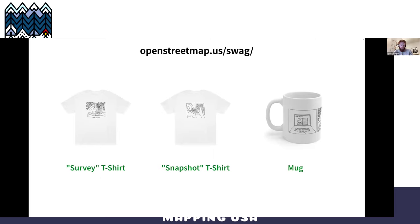We have t-shirts now. If you go to openstreetmap.us/swag, you can check out all our swag items — white t-shirts and white mugs with the classic Field Papers designs. And maybe if you contribute, we'll send you a free t-shirt. I did not run that past Maggie yet, so we'll see, but hopefully we'll have some incentives like that.